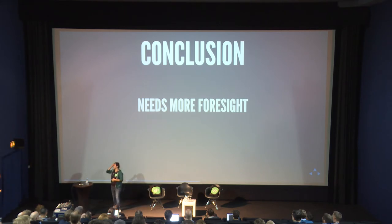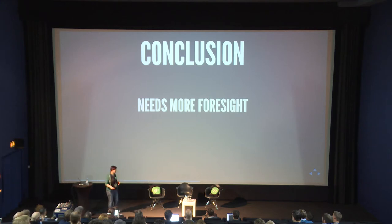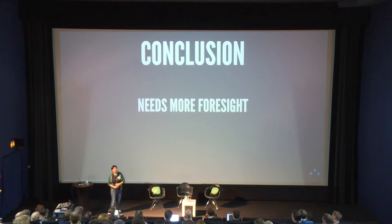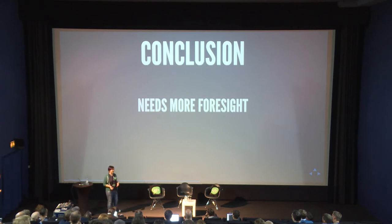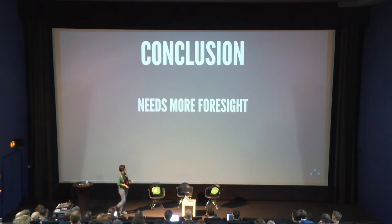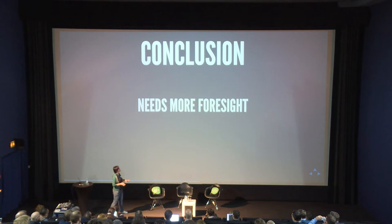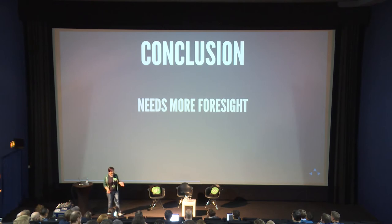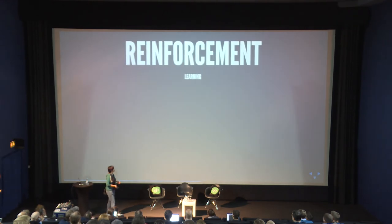One idea was to simulate 10 moves ahead and say the score will increase by X in the next 10 moves rather than just the next one. But that's a lot of calculation and you don't get that much useful data. So I thought maybe Synaptic and classification wasn't the best approach for this problem. I went on the internet and found something called reinforcement learning.